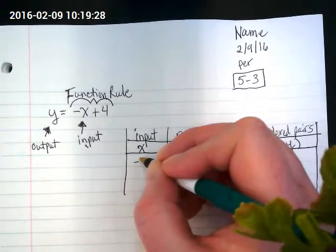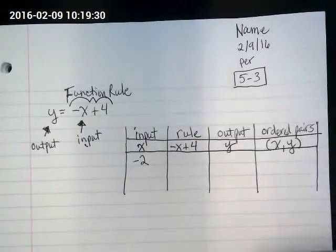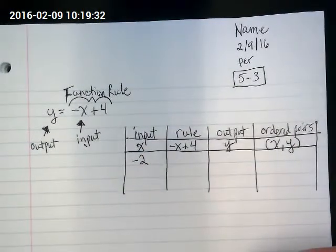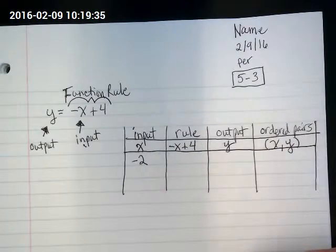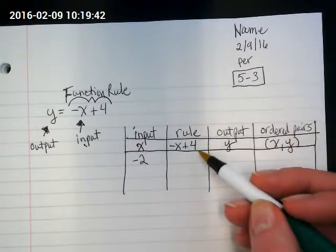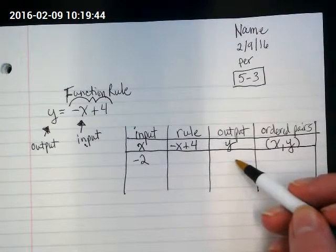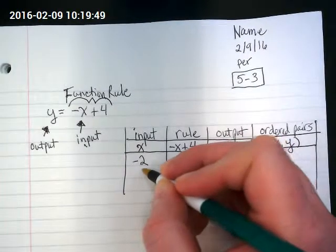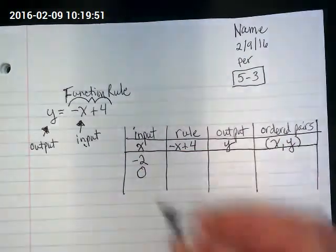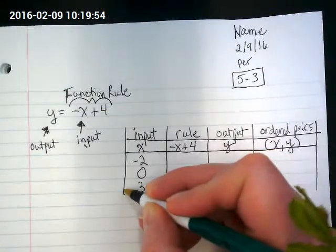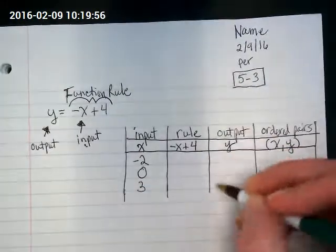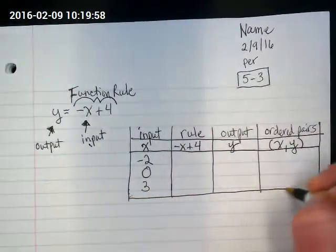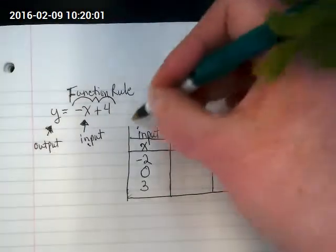And let's put some numbers in for x. What if x was negative 2? And this is the real important part of what we're putting together here. We're going to try some different numbers for x, and we're going to put them into a rule, and we're going to get different outputs depending on what we put in. I like to try a negative, the number zero, and a positive.